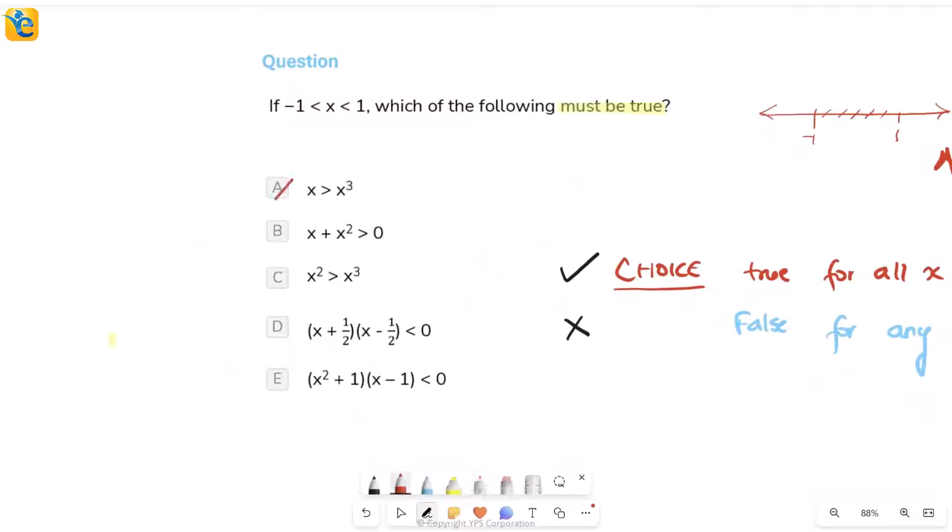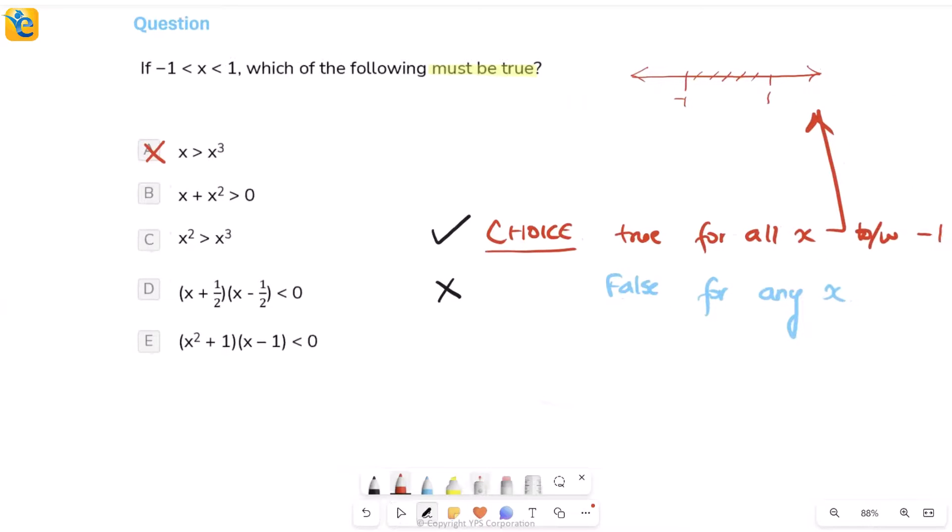So choice A is not the correct answer. Now, once you've done this for one choice, this analysis is going to be faster for the others. It's easier. Let's go to B and do the same thing.